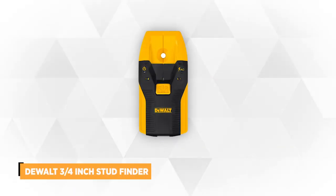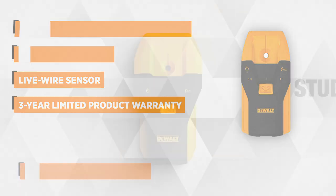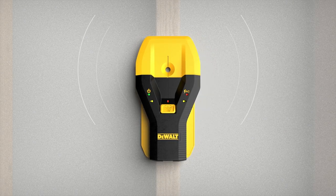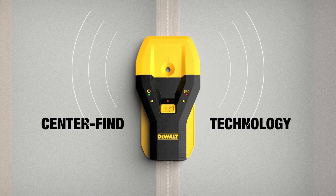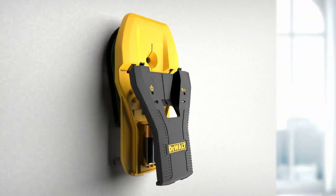At number five is the Dewalt 3/4 inch stud finder. This product features an advanced center find technology to locate studs and live wires, helping you save time when scanning the wall. The accuracy of this product's sensor will impress you. It identifies wood and metal studs, as well as AC wiring effectively, and you can hold it at an angular position. The product has multiple scanners with a detection mechanism that works efficiently. It can detect wood and metal from 3/4 inch deep with 100% precision.